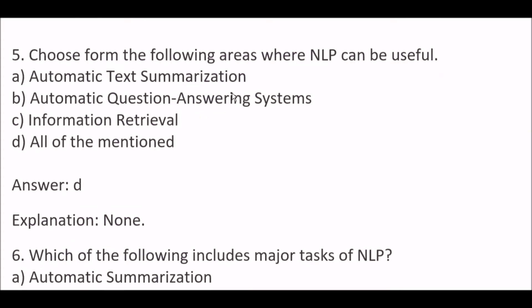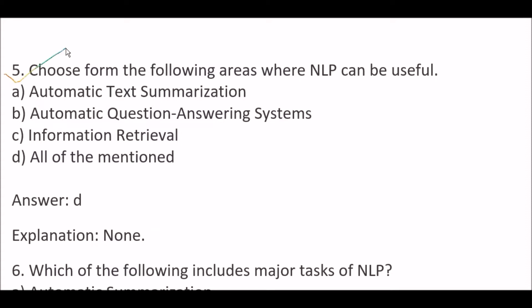Next question: choose from the following areas where NLP can be useful. Options are: A) Automatic text summarization, B) Automatic question answering system, C) Information retrieval, D) All of the mentioned. The right answer is option D, all of the mentioned. NLP can be useful in automatic text summarization, automatic question answering systems, and information retrieval.